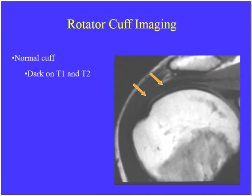The rotator cuff musculotendinous junction lives at the 12 o'clock position of the humeral head. This is a T1-weighted image — we know because we have bright signal fat and subcutaneous high signal fat with no fluid in the joint. The cuff should be dark on both T1 and T2 — it's made of fibrous material. As the cuff comes across, you shouldn't see any intermediate or high signal within it all the way down to bone. Follow this black line all the way to the bone and make sure it touches without any high signal.